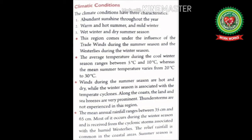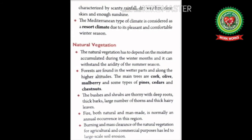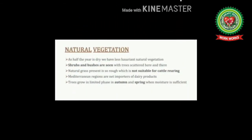Thunderstorms are not experienced in this region. The mean annual rainfall ranges between 35 cm and 65 cm, most of it occurring during the winter season from cyclonic storms associated with the humid westerlies. Relief rainfall is common in coastal areas. The summer season is characterized by scanty rainfall, dry weather, clear skies, and enough sunshine. The Mediterranean type of climate is considered a resort climate due to its pleasant and comfortable winter season.